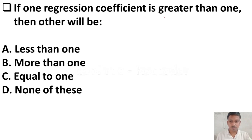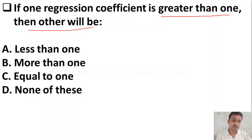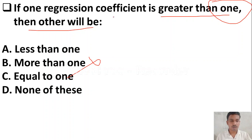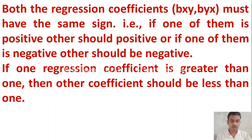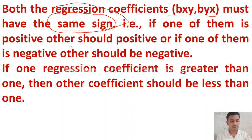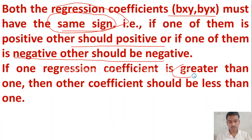The next question: if one regression coefficient is greater than 1, the other will be — option A less than 1, option B more than 1, option C equal to 1, option D none of the above. Since both regression coefficients cannot exceed unity, we can eliminate option B. If one regression coefficient is greater than 1, the other must be less than 1. Also remember that both regression coefficients Bxy and Byx must have the same sign.